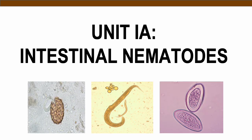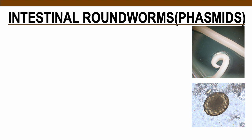Intestinal nematodes can be acquired through various modes of transmission. Ingestion of embryonated eggs includes Ascaris, Trichuris, and Enterobius. Skin penetration includes hookworms and Strongyloides. Now let's begin discussion of intestinal roundworms.